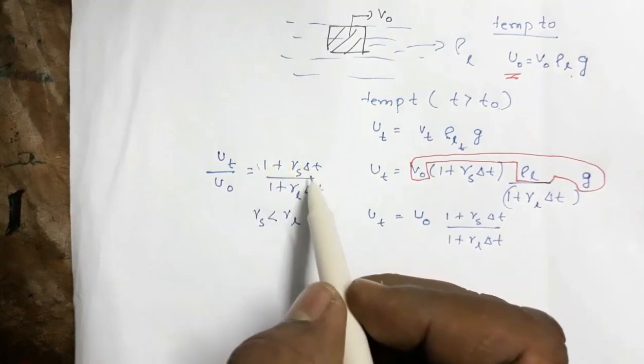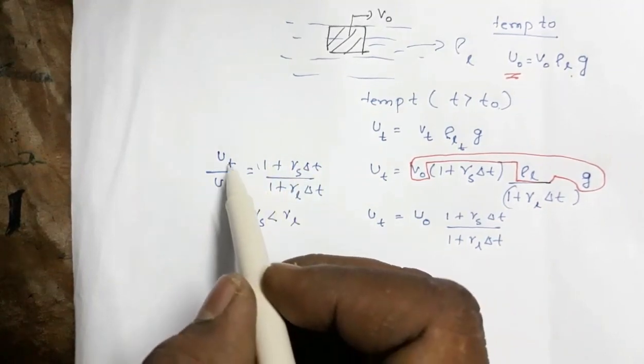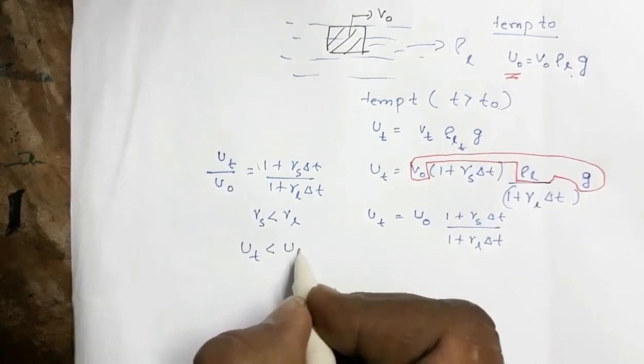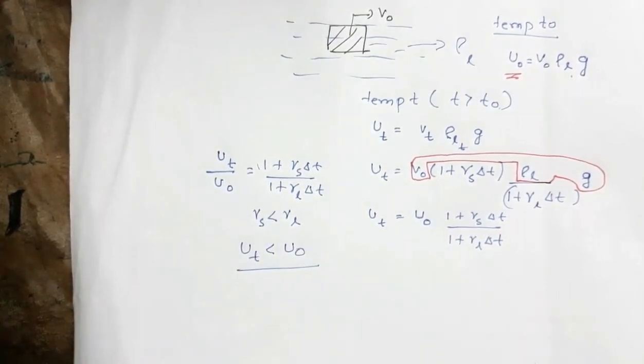So that means this entire quantity is less than this. So that means UT is less than U0.